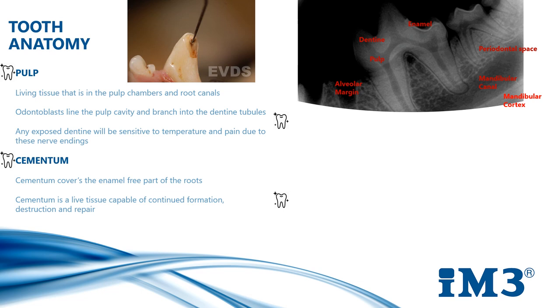As an animal ages, odontoblasts lay down secondary dentine which reduces the width of the pulp cavity. This causes the tooth to become much stronger in older animals.